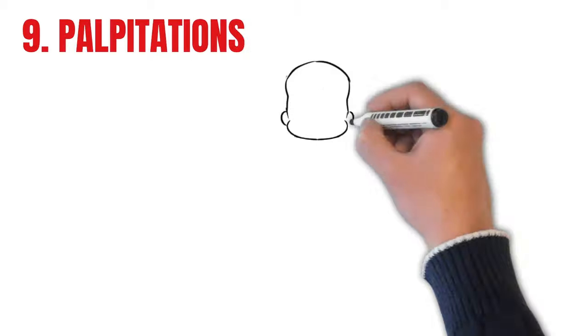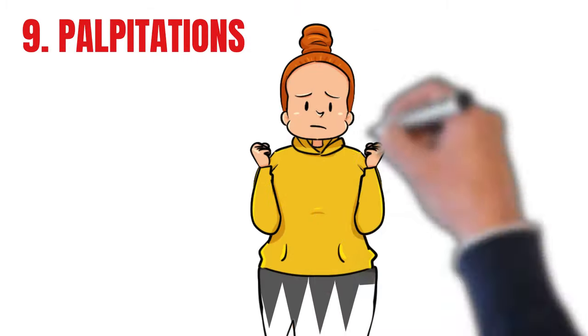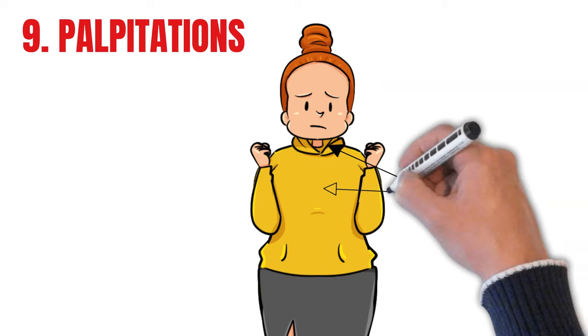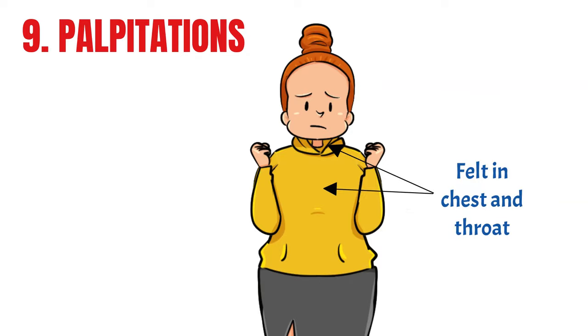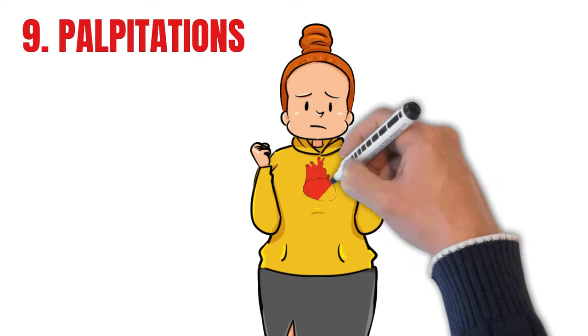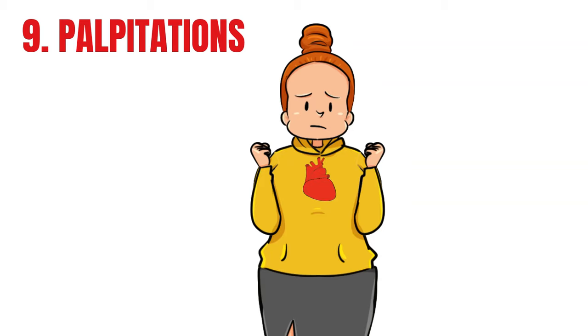Nine is palpitations, which may be felt in the chest or throat. The reason you get them is simply because your heart is pumping much stronger to deal with a perceived danger that is not there. And the reason you feel it in your throat is simply because that's where your carotid artery is. And an increase in blood volume and speed through this artery is very noticeable.